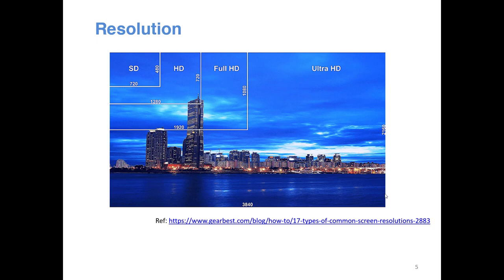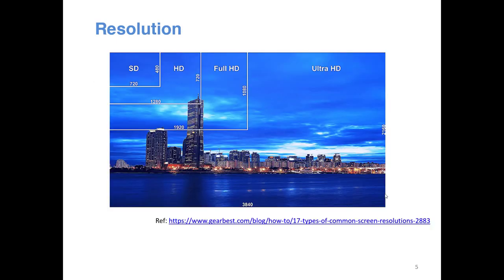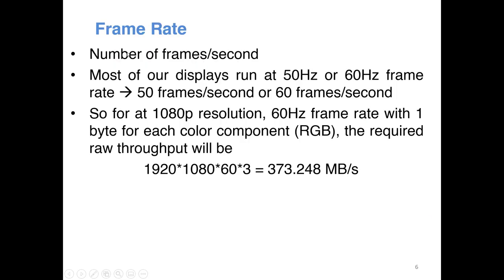Resolution basically tells you how many pixels are supported by your display. Each pixel usually has three values — one pixel constitutes RGB, three sub-pixels internally and physically. The next term we hear is frame rate, which means the number of frames per second. Video is a series of images, so frame rate tells you how many frames there are per second.